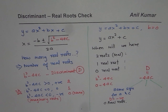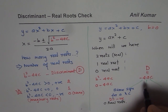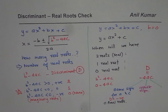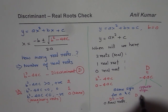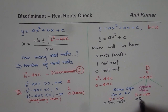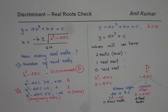The second condition is that the signs of a and c are opposite. If a and c have opposite signs, then the value of the discriminant will be positive. Since the discriminant is positive, we will get two real roots.